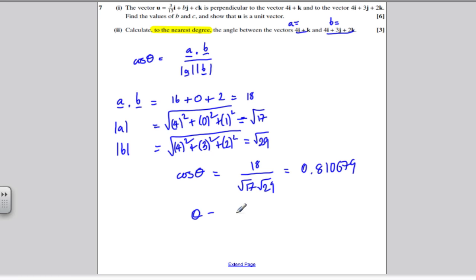So the angle must be the inverse cos of this up here, keeping that as an answer in your calculator, and you get 35.8 degrees. To the nearest degree is 36 degrees.